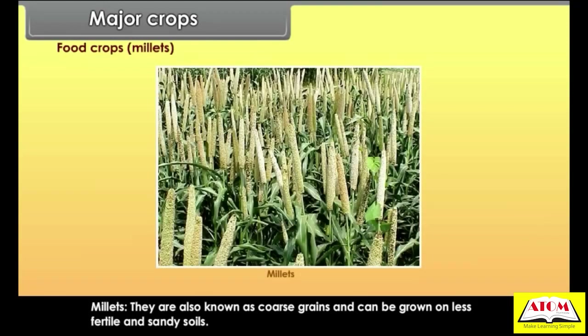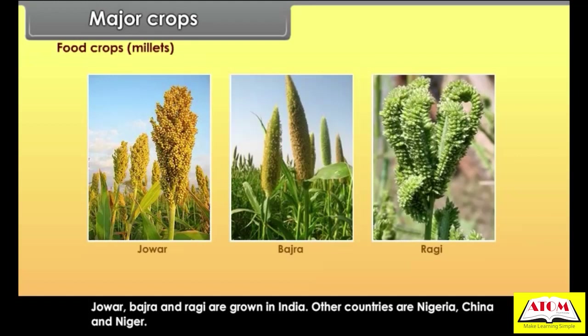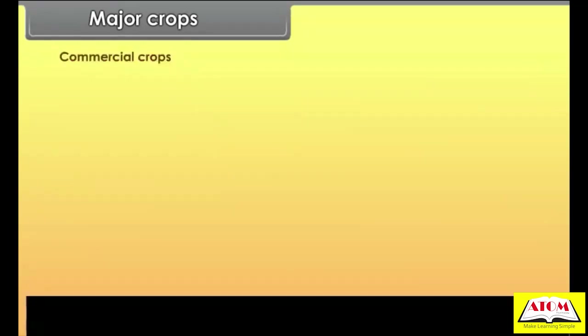Millets are also known as coarse grains and can be grown on less fertile and sandy soils. It is a hardy crop that needs low rainfall and high to moderate temperature. Jowar, Bajra and Ragi are grown in India. Other producing countries are Nigeria, China and Niger.